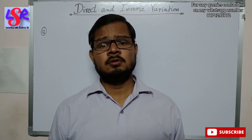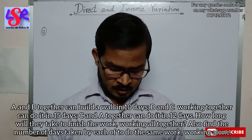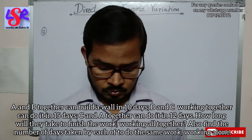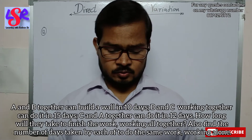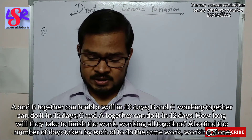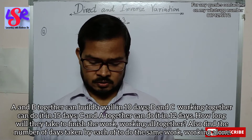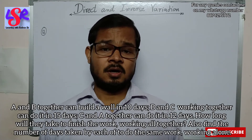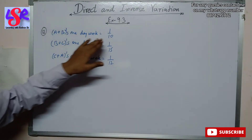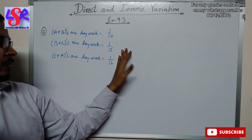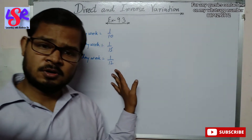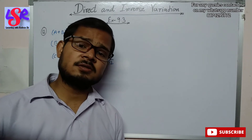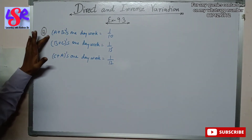Now question number 12. A and B together can build a wall in 10 days, B and C working together can do it in 15 days, and C and A together can do it in 12 days. How long will they take working all together? Also find the number of days taken by each of them working alone. A plus B's one day work is 1 upon 10, B plus C's one day work is 1 upon 15, and A plus C's one day work is 1 upon 12.